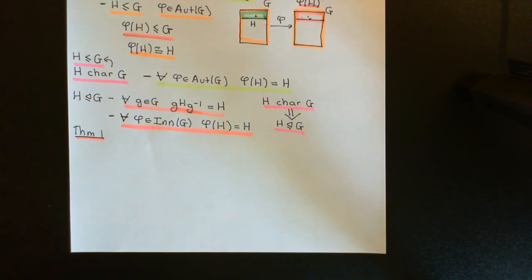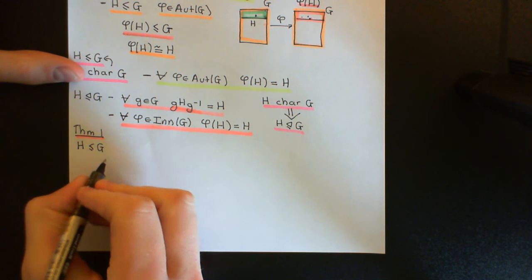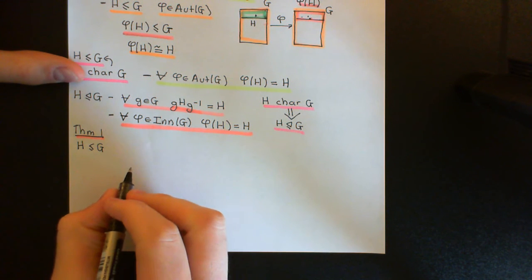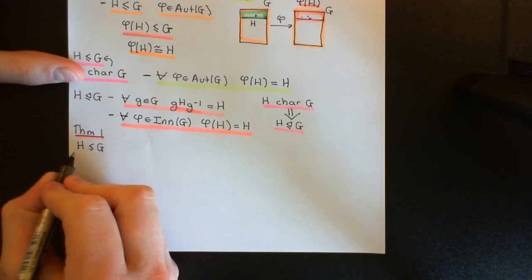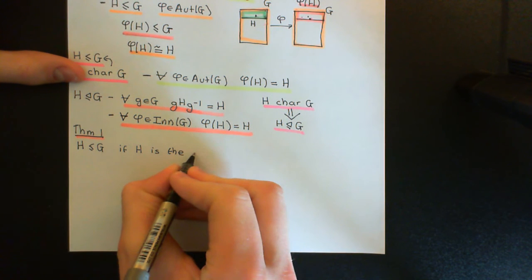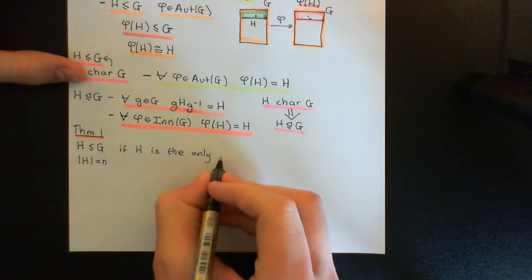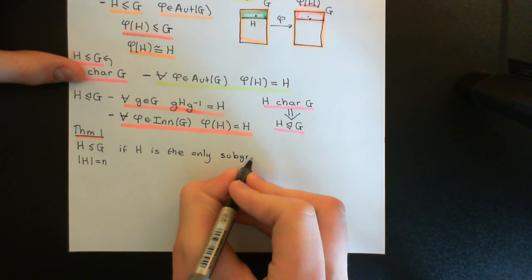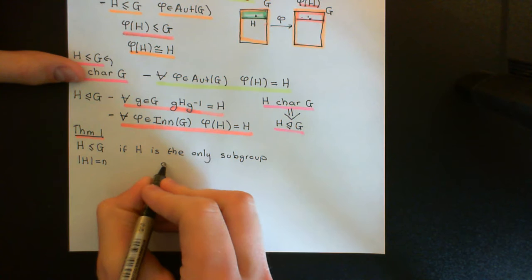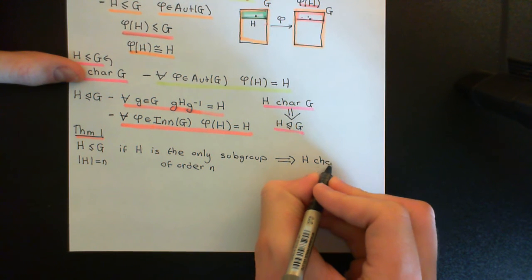Theorem 1 is a very easy way to actually conclude that a subgroup is a characteristic subgroup — you can instantly conclude it. So if H is a subgroup of G, and the order of H equals some n, then if H is the only subgroup of G with order n, you can instantly conclude that H is a characteristic subgroup of G.